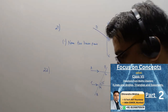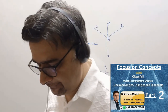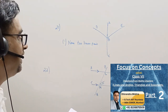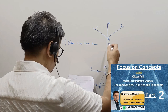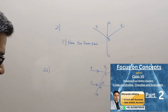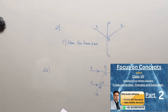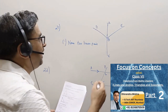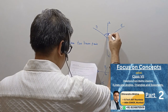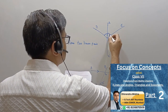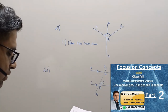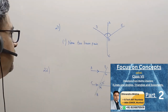Question number 21. In this figure, we have A, B, and C given as collinear, which means they lie along a straight line. And we have angle DBA equal to angle EBA. This is given. These two angles are equal. Now, name two linear pairs.